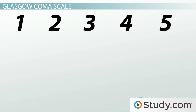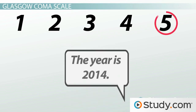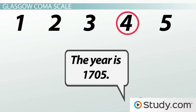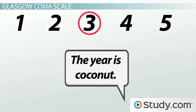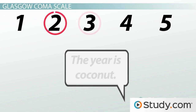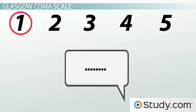For the verbal response, there are 5 grades. A 5 is given to those giving cohesive and oriented responses to questions, a 4 for confused responses to questions, a 3 for random and inappropriate words, a 2 for moans and groans, and a 1 for no verbal response.